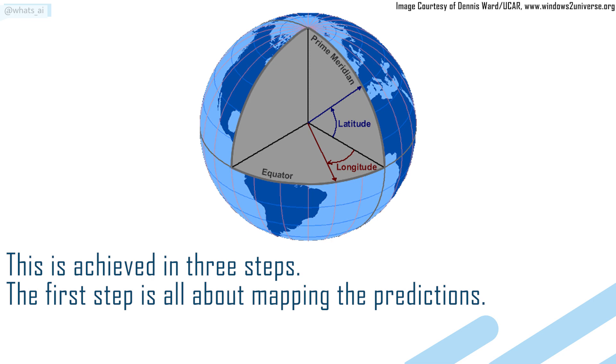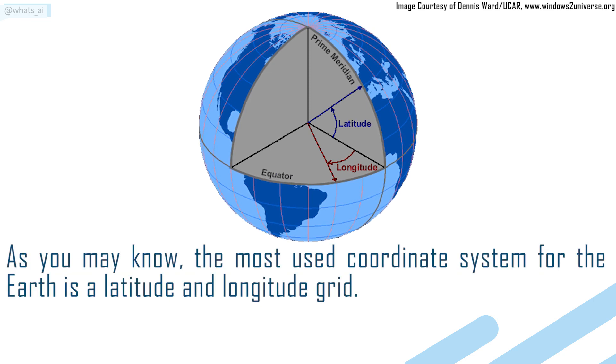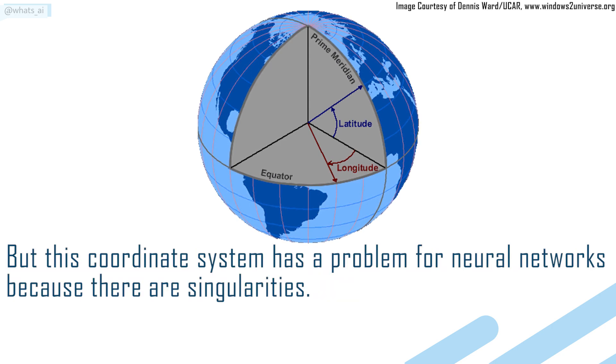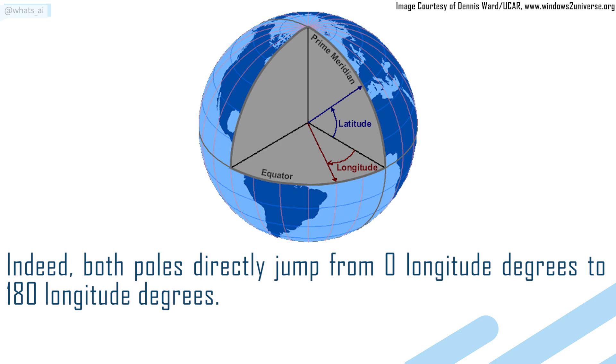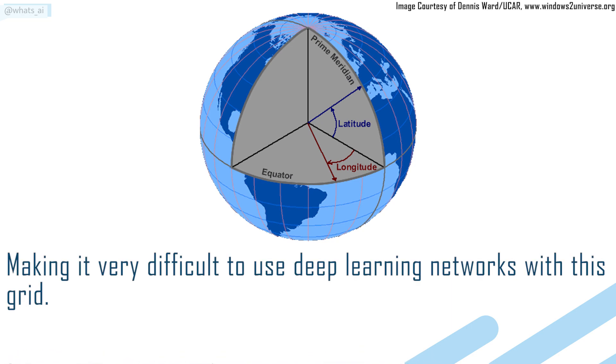The first step is all about mapping the predictions. As you may know, the most used coordinate system for the Earth is a latitude and longitude grid. But this coordinate system has a problem for neural networks because there are singularities. Indeed, both poles directly jump from zero longitude degrees to 180 longitude degrees, making it very difficult to use deep learning networks with this grid.